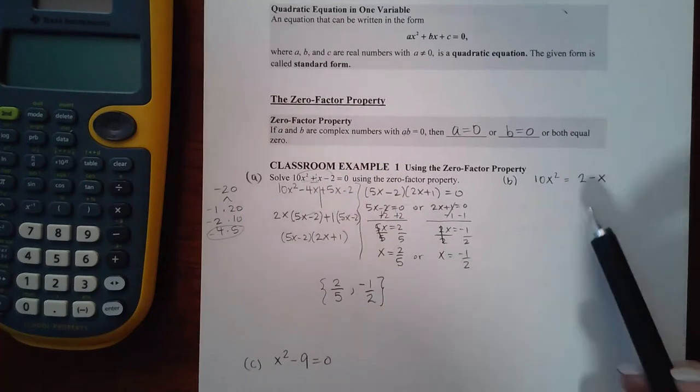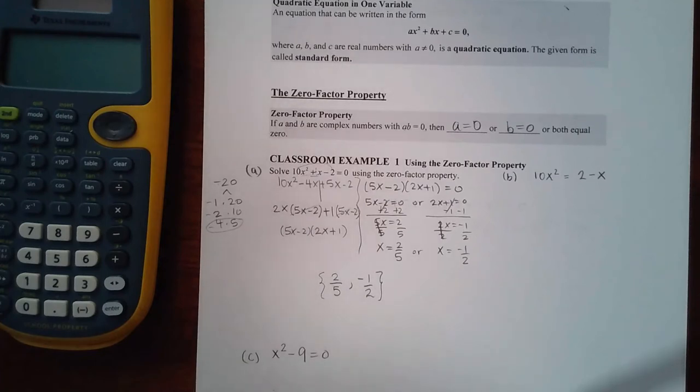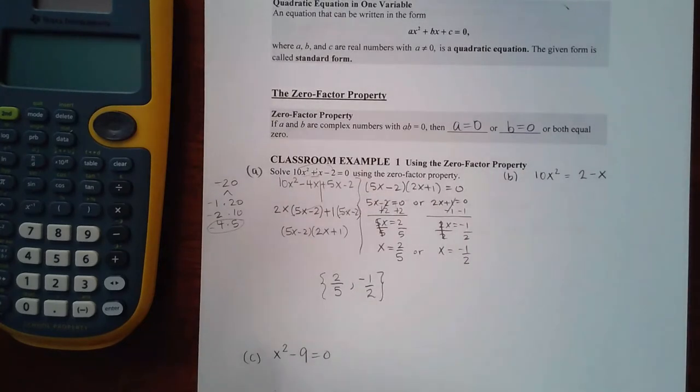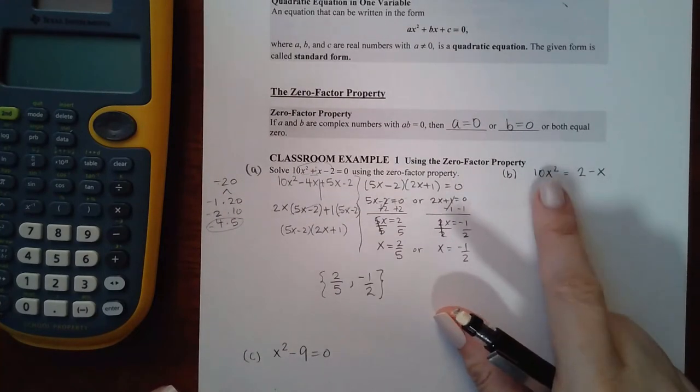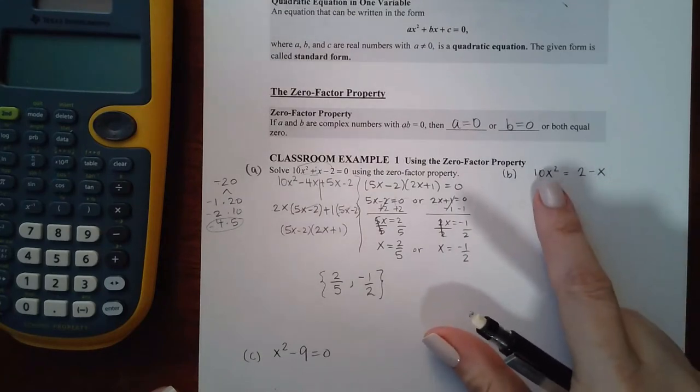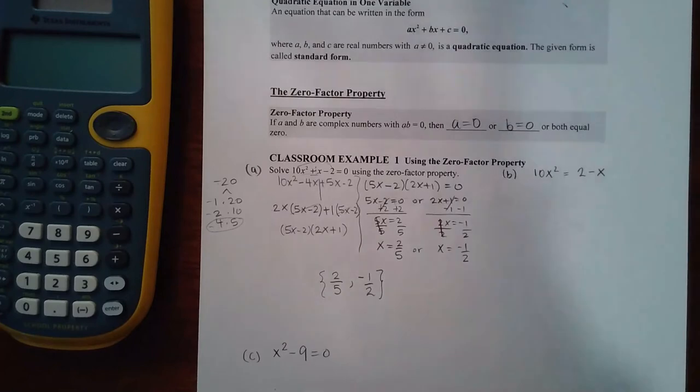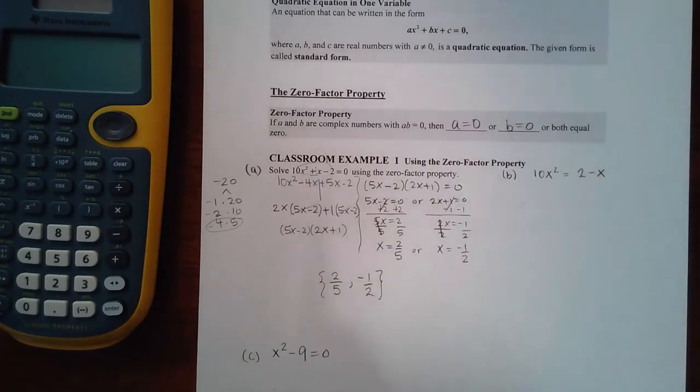Now I also want you to notice that you might get equations that look like this. Notice that these equations are not equal to zero, and so it is your job to make it so that it is equal to zero. My suggestion is keep the x² term positive. So if it is positive already, leave it there and move the other two terms over to that side. If this term were a negative x² term, then I would want to move the negative x² term over to make it positive, and then everything else would have to go to that side as well. You always want to make sure you move your terms so that your squared term is positive.